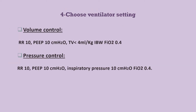For specific settings, for example volume control: use respiratory rate 10, PEEP 10 cm H2O, tidal volume less than 4 mL per kg ideal body weight, and FiO2 40%. If we use pressure control, we usually set it as triple 10: inspiratory rate 10, PEEP 10, and inspiratory pressure 10, with FiO2 40%.